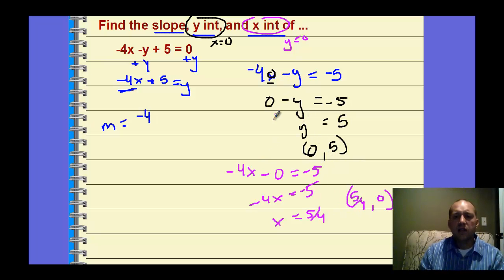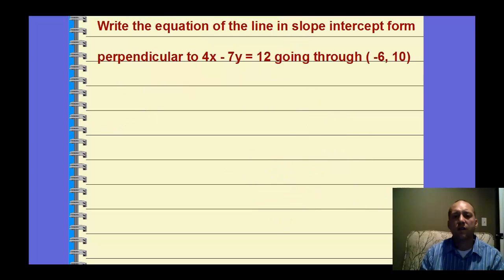And so I tend to like this method, and actually sometimes we'll call it cover-up to help us graph it to find these two points quickly. If you cover up this term and then solve for y, you'll find the y-intercept. And then if you cover up the other one, if you cover up the y-term and then solve for x, you'll find the x-intercept. And so that's a way of quickly finding the x and y-intercepts, which would help us graph it as well.